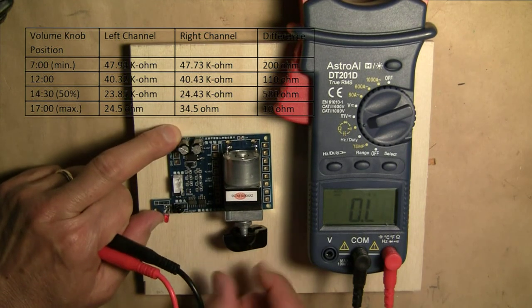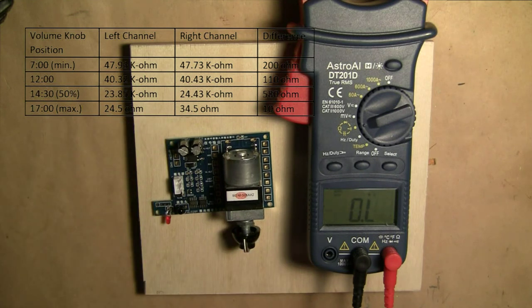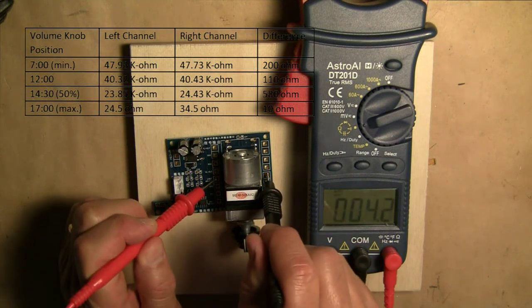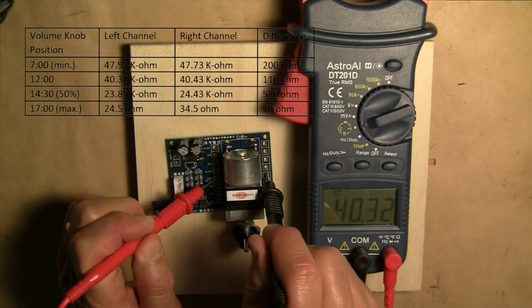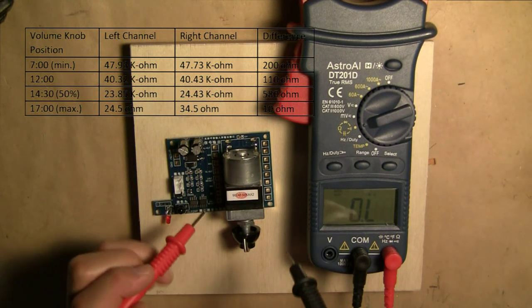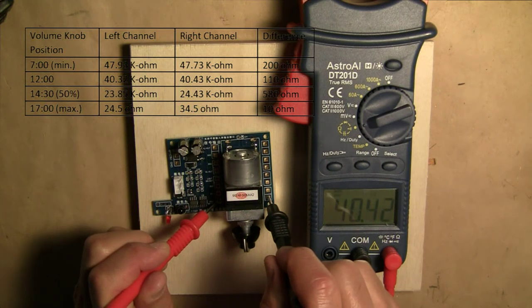At the 12 o'clock position, the resistance on the left channel is 40.32. On the right channel, 40.43.